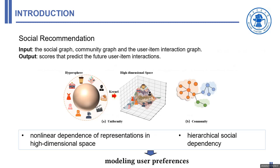Contrastive learning has catalyzed a productive avenue of research for recommendation. The efficacy of most contrastive learning methods for recommendation may hinge on their capacity to learn representation uniformity by mapping the data onto a hypersphere. Nonetheless, applying contrastive learning to downstream recommendation tasks remains challenging, as existing methods encounter difficulties in capturing the nonlinear dependence of representations in high-dimensional space, and struggle to learn hierarchical social dependency among users, which are essential points for modeling user preferences.